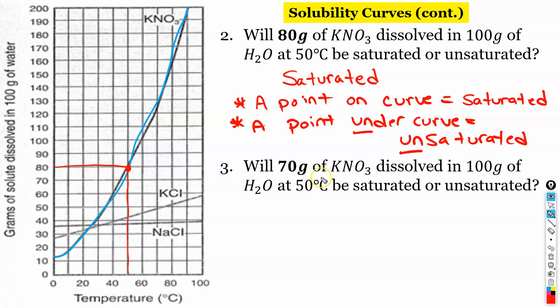Okay here's another one. So 70 grams of KNO3 at 50 degrees saturated or unsaturated. Okay so if we go over here this point is not on the curve. So this will be unsaturated.